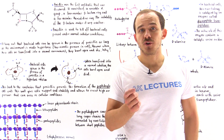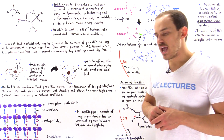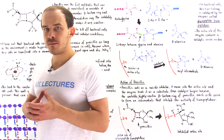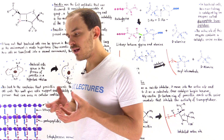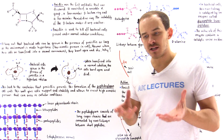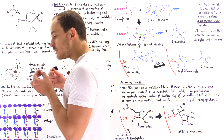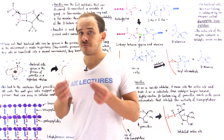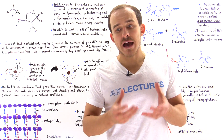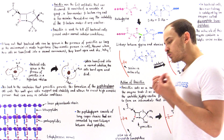In our discussion on irreversible inhibitors, we briefly mentioned penicillin. We said that penicillin is an example of a suicide inhibitor — basically a molecule that binds onto an enzyme found in bacterial cells and inhibits the activity of that enzyme. It prevents the enzyme from actually forming the peptidoglycan cell wall found around the membranes of bacterial cells.